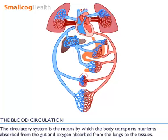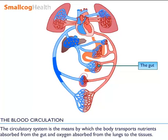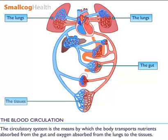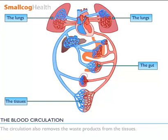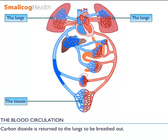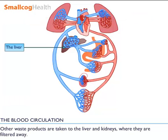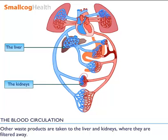The circulatory system is the means by which the body transports nutrients absorbed from the gut and oxygen absorbed from the lungs to the tissues. The circulation also removes the waste products from the tissues. Carbon dioxide is returned to the lungs to be breathed out. Other waste products are taken to the liver and kidneys where they are filtered away.